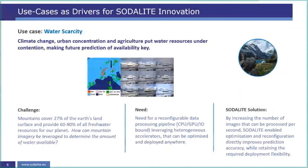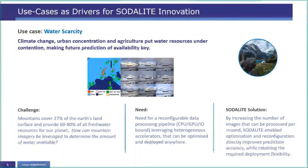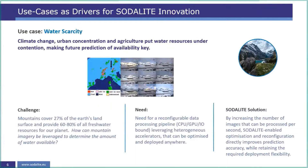The interesting part of this use case is that it's not just a pure GPU problem — it has a fairly complex data processing pipeline that at various times can be CPU-bound, GPU-bound, or I/O-bound. Beyond that, they don't necessarily know what kind of infrastructure it's going to run on. Satellite solves this by increasing the number of images that can be processed, improving prediction accuracy, achieved mostly through runtime reconfiguration and application of optimizations as processing goes through the pipeline at different stages, while continuing to provide deployment flexibility.